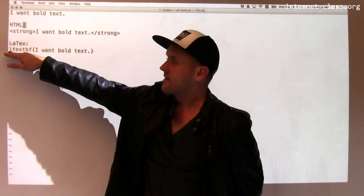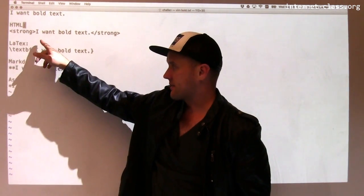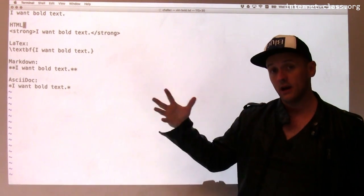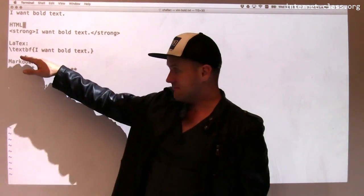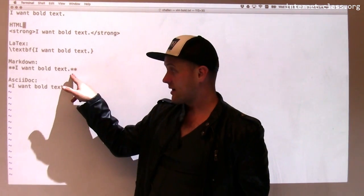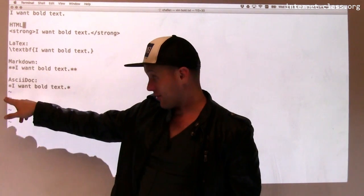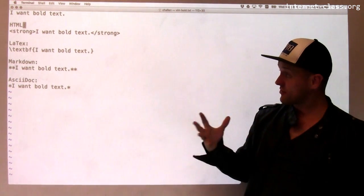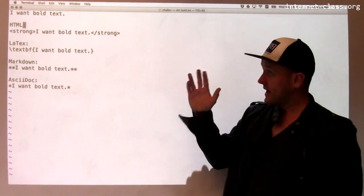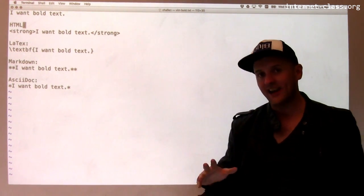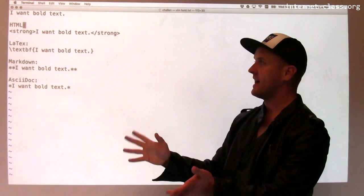In LaTeX, I start a tag using text BF in this particular case, and then these braces define where the tag goes. In Markdown and ASCII doc, I use stars, either two in Markdown or one in ASCII doc. Now, what's interesting about this is if you look at the number of extra characters I had to type to achieve bold text.